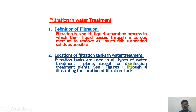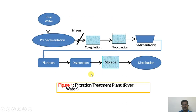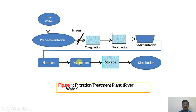Various figures illustrate the location of filtration tanks. For a river water source, the typical flow sequence is: pre-sedimentation, screening, coagulation, flocculation, sedimentation, followed by filtration, then disinfection, storage, and distribution. This is the normal flow diagram for a river-sourced water treatment plant.